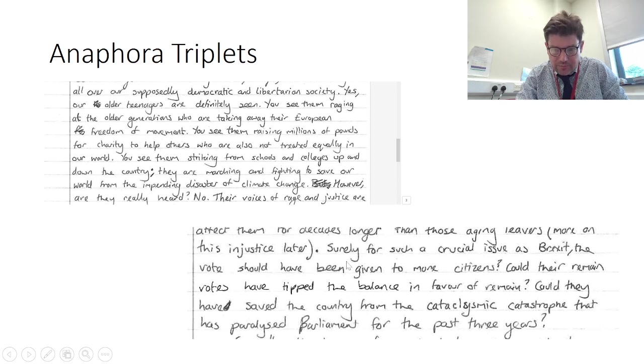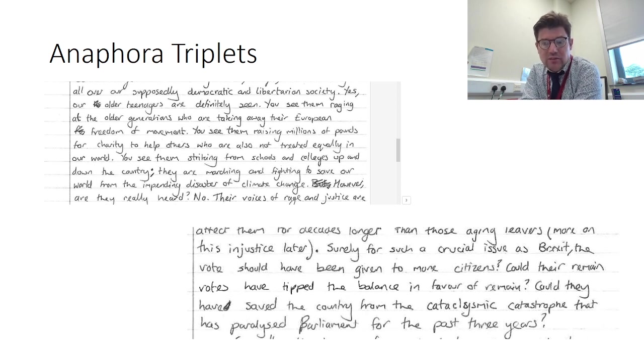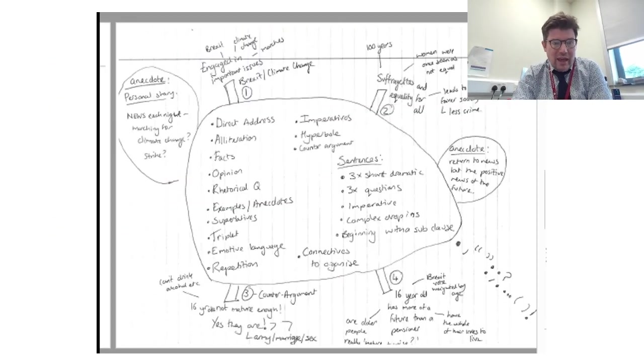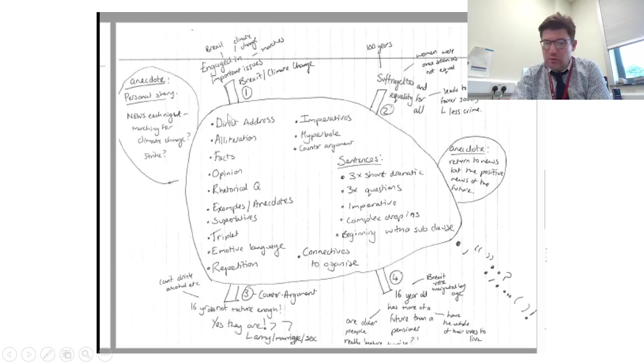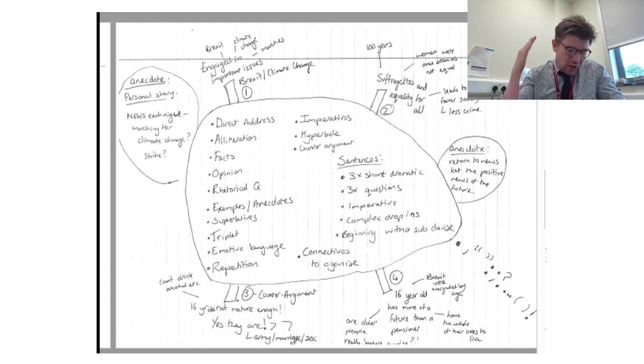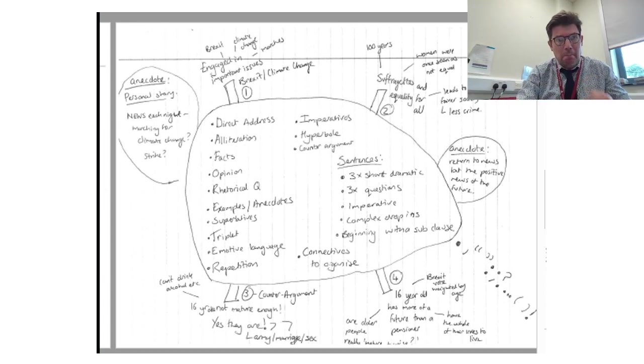Then here again, you've got a triplet of rhetorical questions. Surely for such a crucial issue as Brexit, the vote should have been given to more citizens. Could their Remain votes have tipped the balance in favour of Remain? Could they have saved the country from the cataclysmic catastrophe that has paralysed parliament for the past three years? The beauty of using the head and engaging opening and a personal anecdote to make up a story that's happened to you or someone else or how you felt when you heard about this is you can use your metaphors, alliteration, personification, all those descriptive techniques because you're describing the emotion that you feel. Make it emotional. Make it convincing.